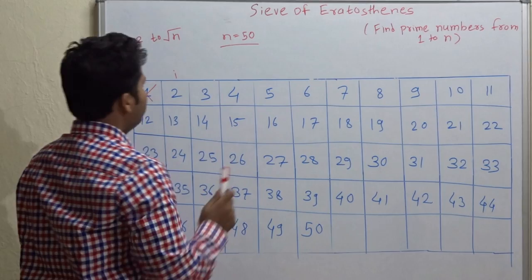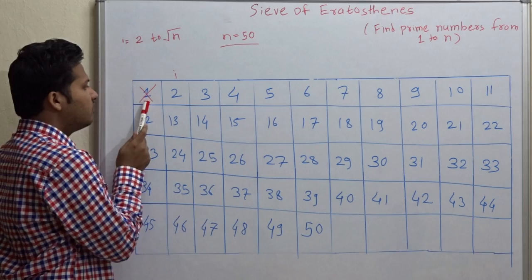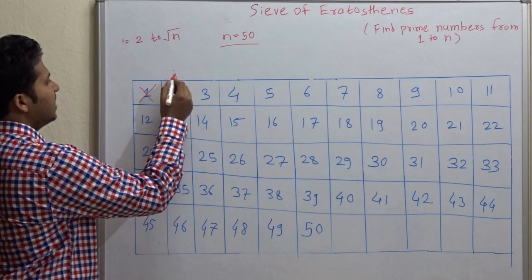Now if n is equal to 50, then make a table and write numbers from 2 to 50 in that table. Here I have cancelled 1 because 1 is not a prime number.